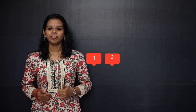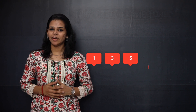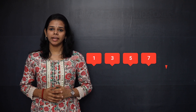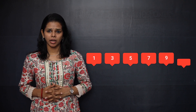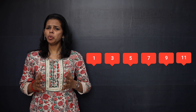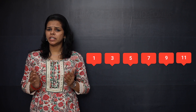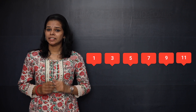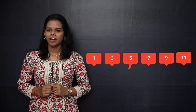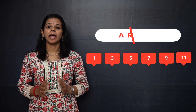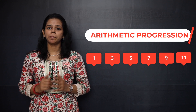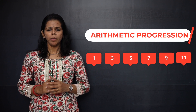1, 3, 5, 7, 9, 11. Do you know what kind of sequence this is? Yes, that's right. This is called an arithmetic progression.